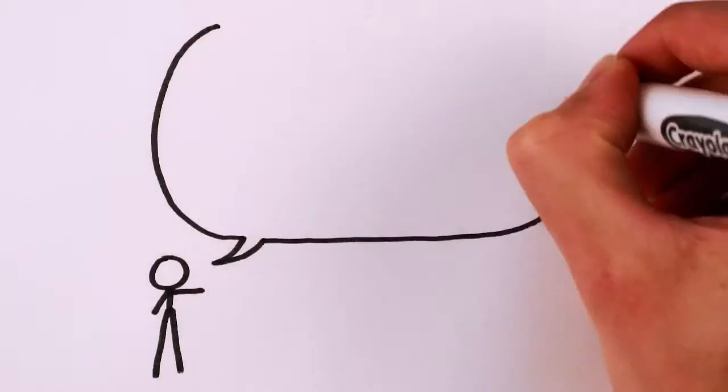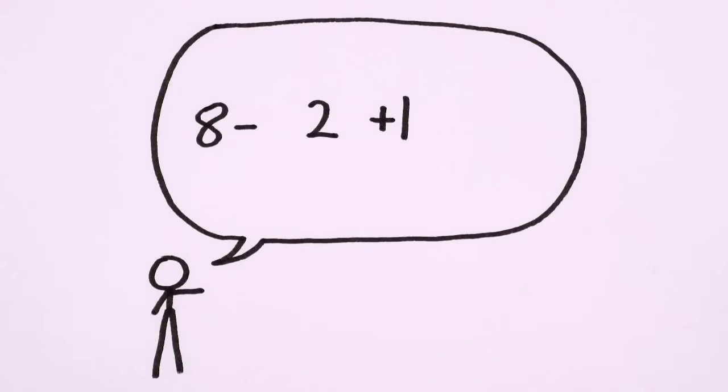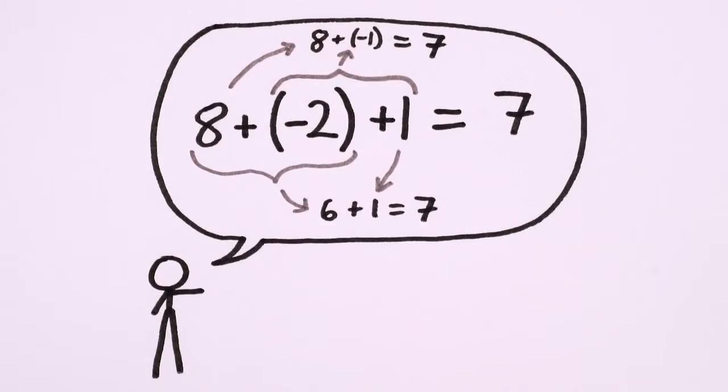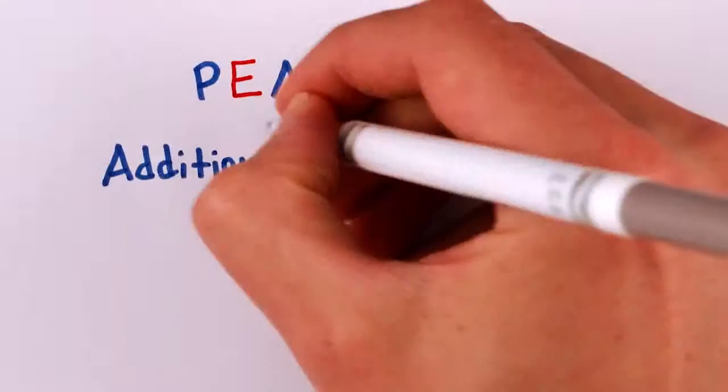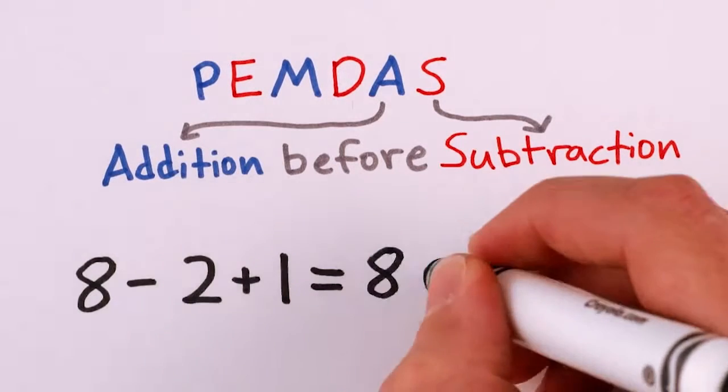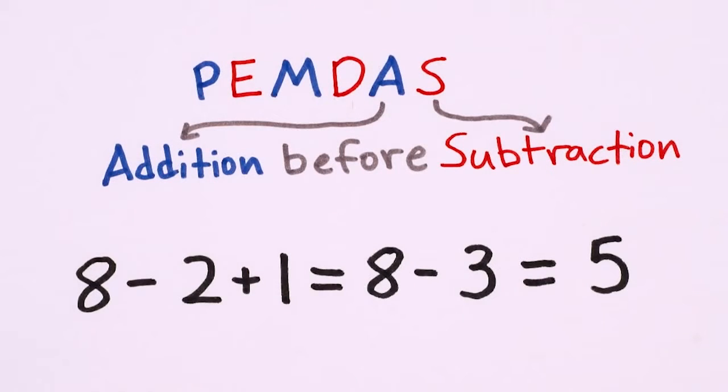A mathematician will tell you that 8 minus 2 plus 1 is really 8 plus negative 2 plus 1, which is unambiguously equal to 7, even though the so-called order of operations standard in the US tells you the answer is 5. If you want 5 for your answer, then you really need some parentheses.